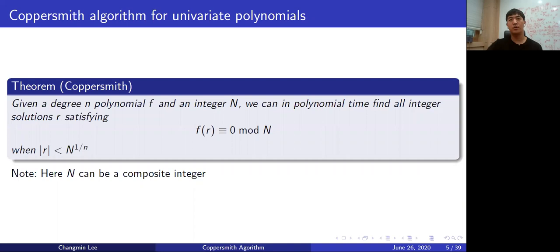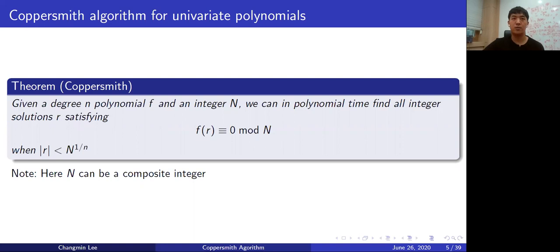Now we are going to move on to the Coppersmith theorem, which is the main theorem of this talk. The theorem allows us to find a small solution by using lattice theory. The Coppersmith theorem says that given a degree-n polynomial f and some integer modulus N, we can efficiently find all of the small integer solutions modulo N. The small solutions satisfy a bound: the size of solutions is less than N to the 1 over n. I note that the integer modulus N can be a composite number.